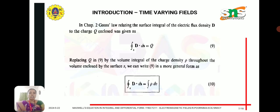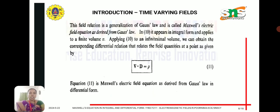Next, Gauss's law relates the surface integral of the electric flux density to charge. So integral D dot ds is equal to Q, which is replaced by integral rho_v dv. Applying the divergence theorem, the differential form gives del dot D equal to rho_v, where rho_v is the volume charge density. This is the Maxwell equation derived from Gauss's law for the electric field, relating the divergence of electric flux density to charge.